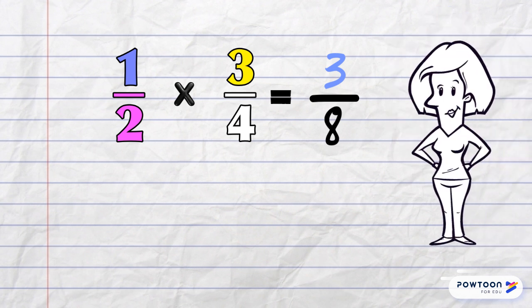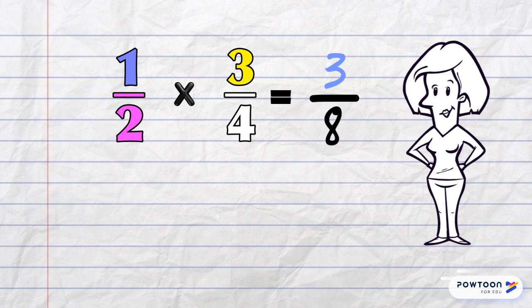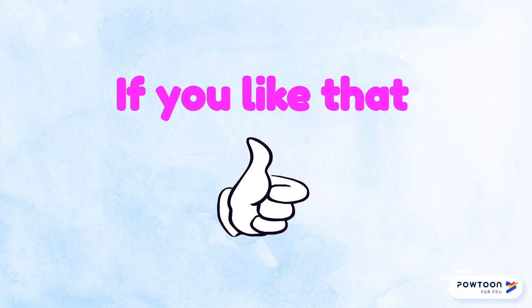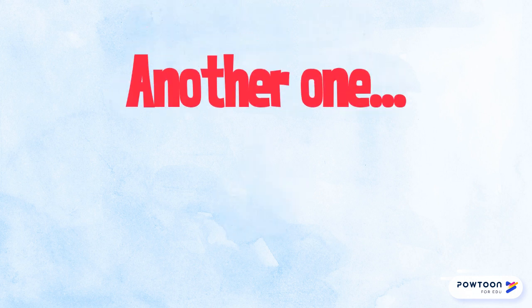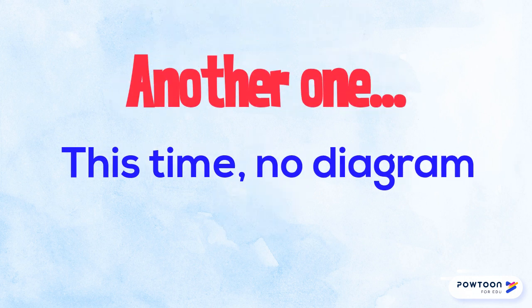And if we can simplify our answer, we must. 3 eighths, of course, can't be reduced, so we're all done. Now, if you like that, you know which button to click. Let's do another one, and this time we'll try it without the diagram.